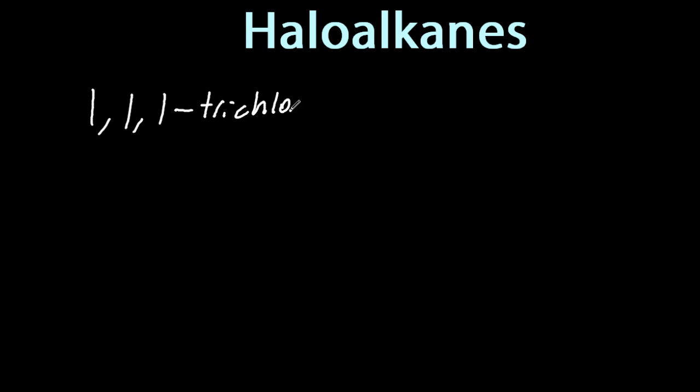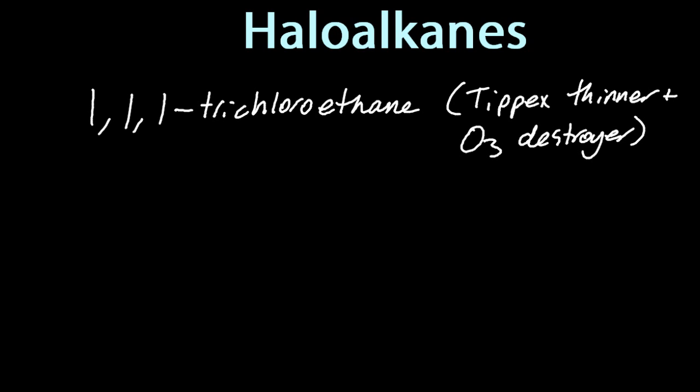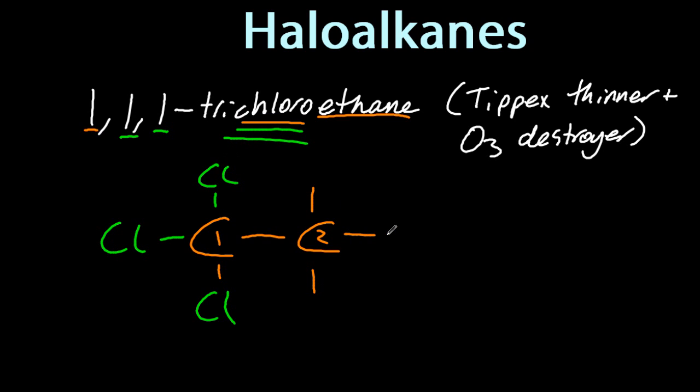A little more complicated. 1,1,1-trichloroethane. That's Tipex thinner, the stuff they use to make liquid paper less crusty and more of a liquid. So ethane is two carbons. And I'm going to put a chlorine on the 1, another chlorine on the 1, another chlorine on the 1. No problem.